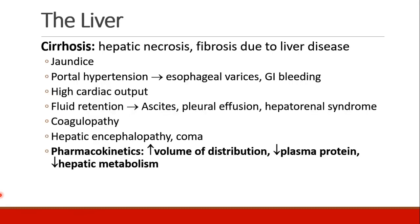Cirrhosis is a condition of hepatic necrosis and fibrosis due to liver disease. Patients with cirrhosis will have jaundice, portal hypertension leading to elevated pressures causing esophageal varices and GI bleeding, high cardiac output, fluid retention in the form of ascites, pleural effusion, hepatorenal syndrome, coagulopathy, and hepatic encephalopathy leading to coma. In these patients, pharmacokinetics will be impaired. They have an increased volume of distribution, decreased plasma proteins, and decreased hepatic metabolism.